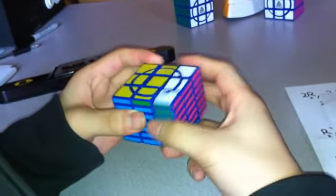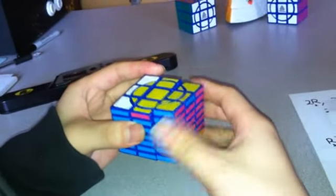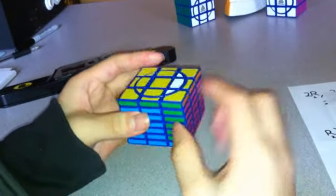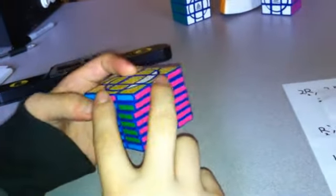I'm going to do R twice, U twice, R twice, U twice, and R twice. Now that's solved the green, and I only have these two left.